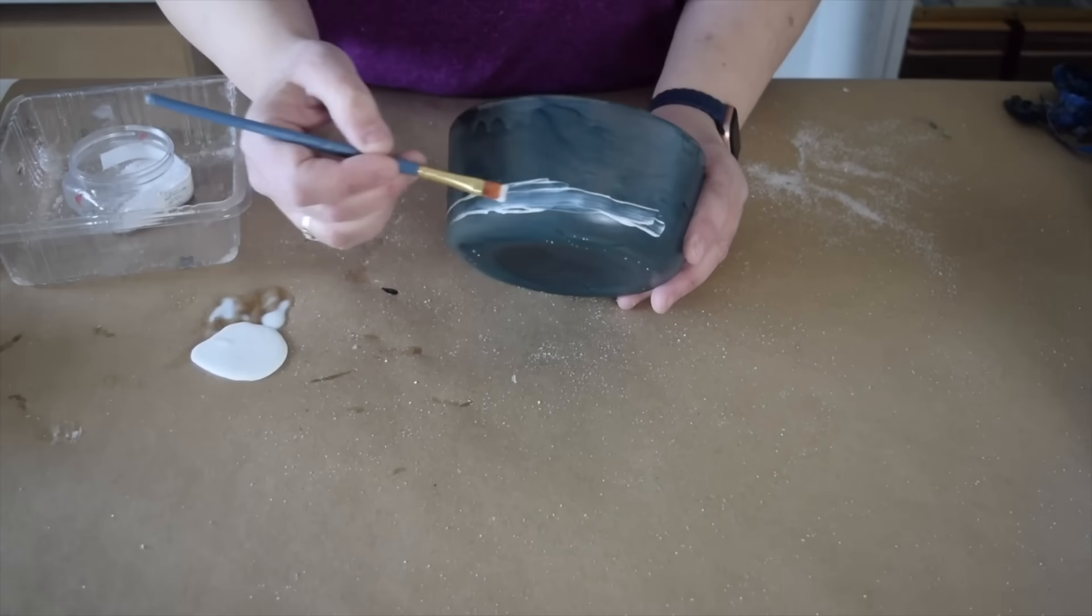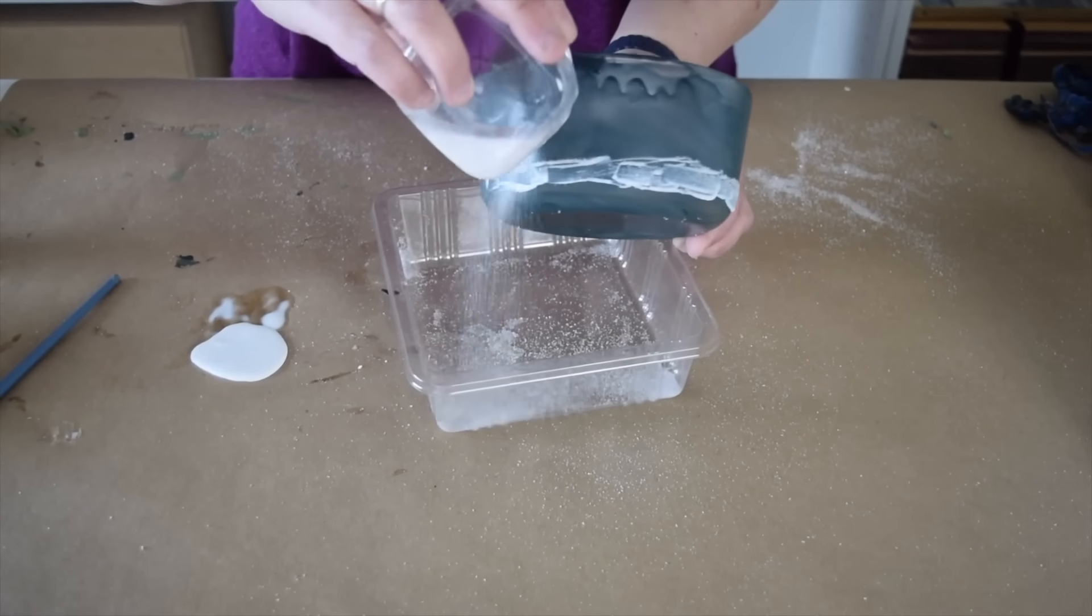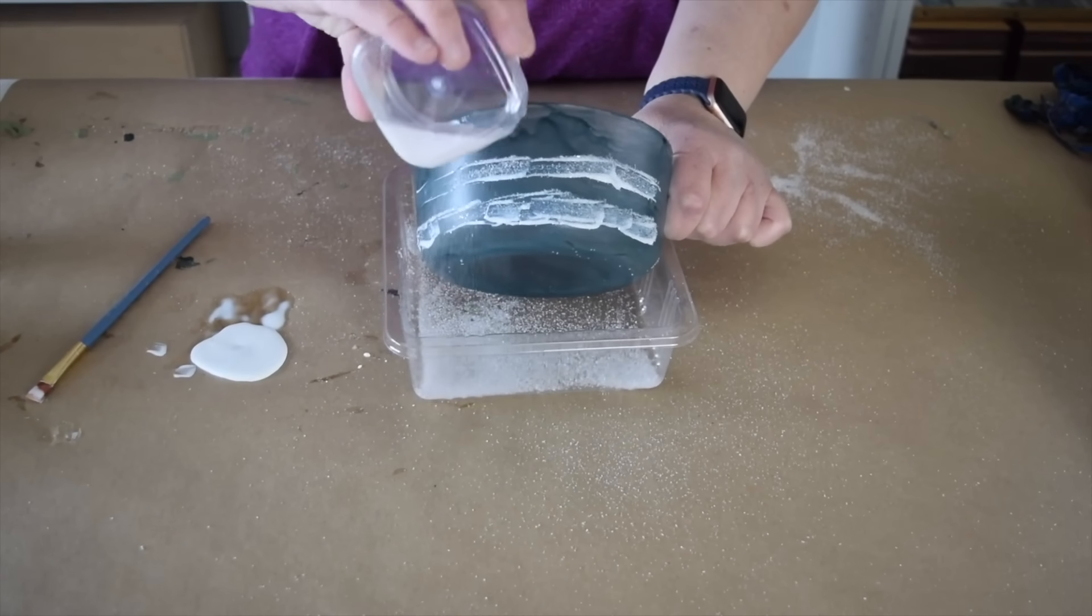Using some Mod Podge, I'm going to paint it around the dishes. I can sprinkle the white glitter all over it and then when it dries the glitter will stay in place.